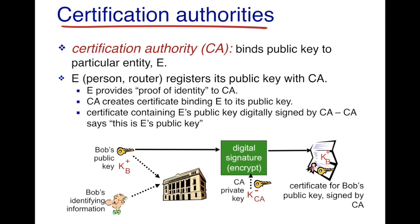The particular entity E — say a person or a router — registers its public key with the CA. E provides proof of identity to the CA. The CA examines the proof of identity, confirms that this is actually E, and then creates a certificate binding E to its public key.